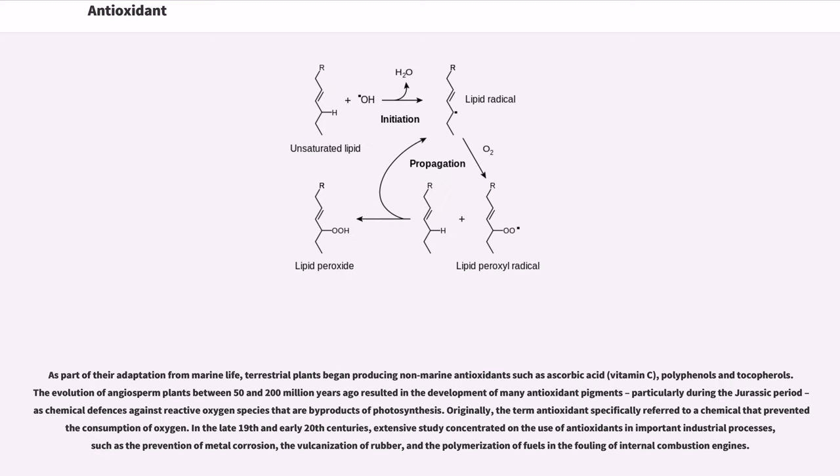As part of their adaptation from marine life, terrestrial plants began producing non-marine antioxidants such as ascorbic acid (vitamin C), polyphenols and tocopherols. The evolution of angiosperm plants between 50 and 200 million years ago resulted in the development of many antioxidant pigments, particularly during the Jurassic period as chemical defenses against reactive oxygen species that are byproducts of photosynthesis.